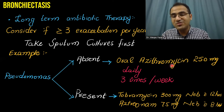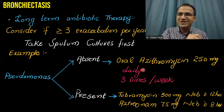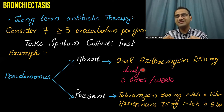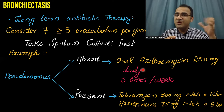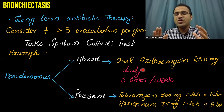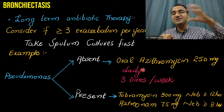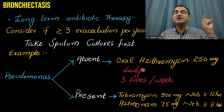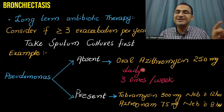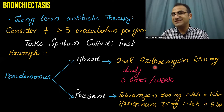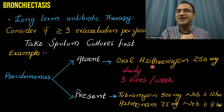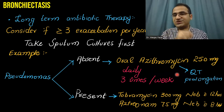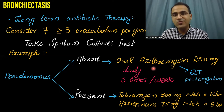An important point: oral azithromycin is a macrolide. Bronchiectatic patients with damaged lungs often develop cor pulmonale — right-sided heart failure — because the right heart has increased workload oxygenating damaged lungs. Oral azithromycin can cause QT prolongation and arrhythmias. So be cautious when prescribing long-term azithromycin to patients who may also have cor pulmonale.